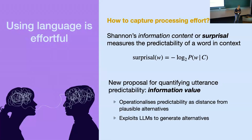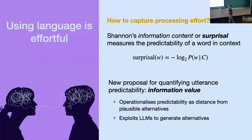There is scope for developing other notions to quantify effort that could be complementary to surprisal. A new proposal we are presenting is to quantify utterance predictability — the effort it takes to predict something — as distance from plausible alternatives. Given a context, something has been said; how effortful is it to process that? We operationalize this as: how distant is this from other possible things that could plausibly have been said in that context. This proposed measure, which we call information value, can be formulated by exploiting the generative capability of LLMs.